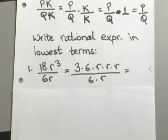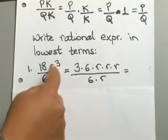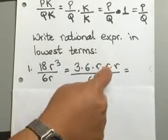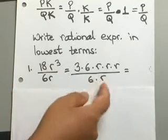Now, to write this rational expression in lowest terms, what I have done is just expanded out our expressions here. You have 18r to the third. So I am breaking 18 down into 3 times 6, and then r to the third is the same thing as r times r times r. And then your denominator is 6 times r, so I just left it as it is.